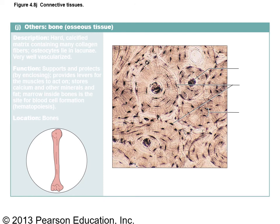The third group of connective tissue is bone, also called osseous tissue. There are two types — spongy bone and compact bone. Compact bone looks like tree trunks cut and stacked. We'll be spending three chapters on bones and joints, so for now just know that bone is a category of connective tissue, it's called osseous tissue, and the cell type is the osteoblast.